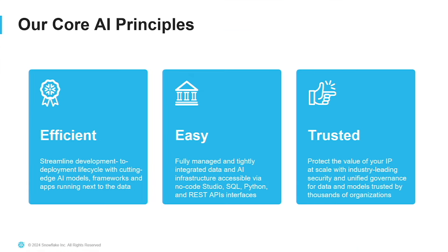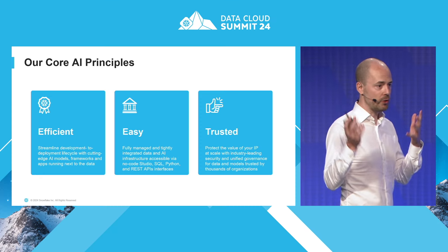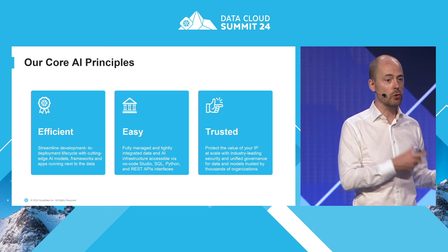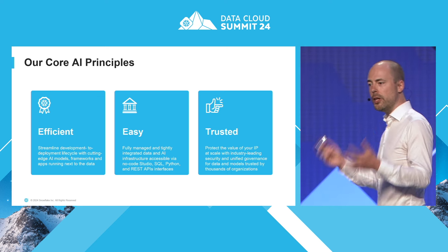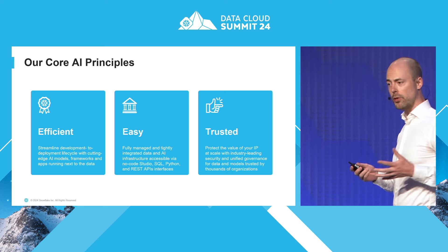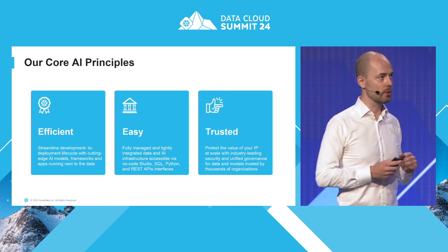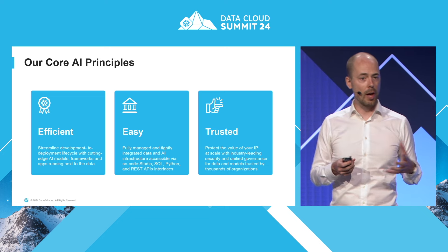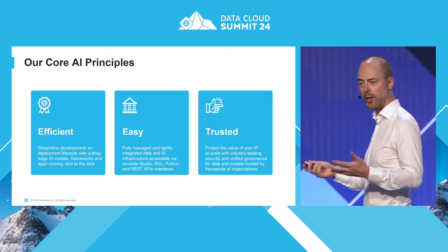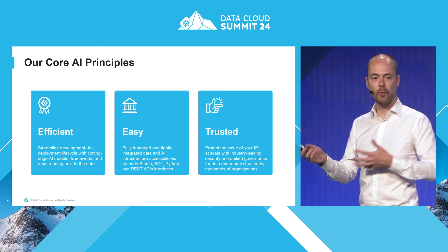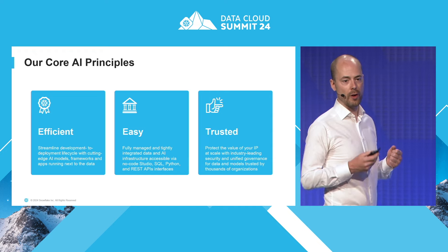At the heart of both of these features are our core ABI principles: efficiency, ease of use, and trustworthiness. Efficiency, because your data is already stored in Snowflake and doesn't need to move for you to start using these features. Ease of use, because the underlying models are fully managed by Snowflake — these capabilities just work out of the box. And we put a lot of emphasis on making sure that the answers we generate are trustworthy, showing users when they can trust the answer versus when they may want to validate it.